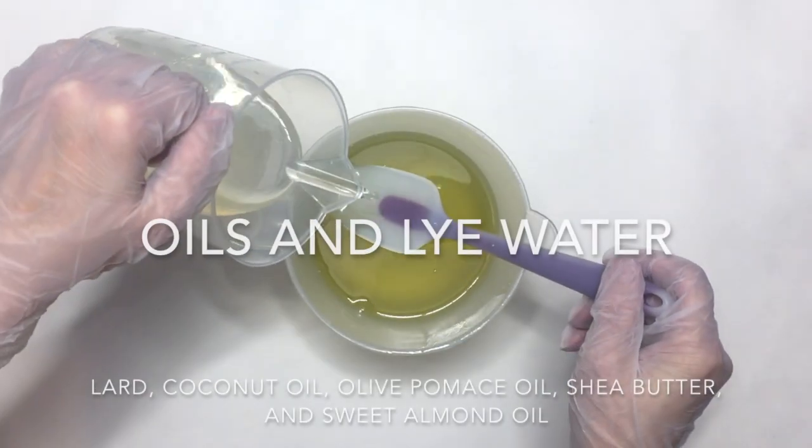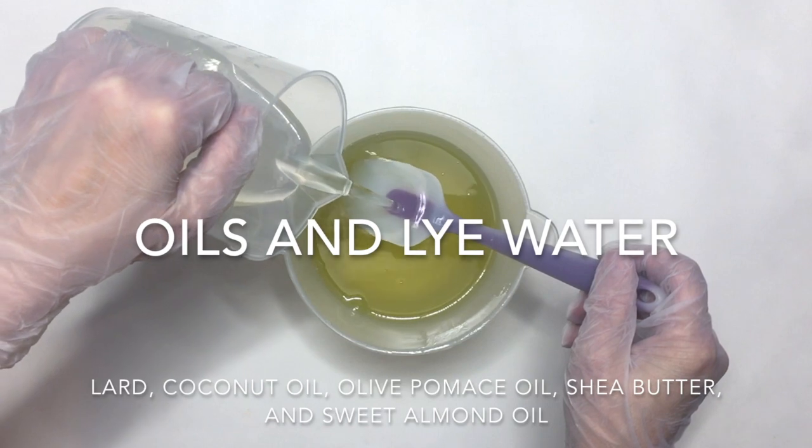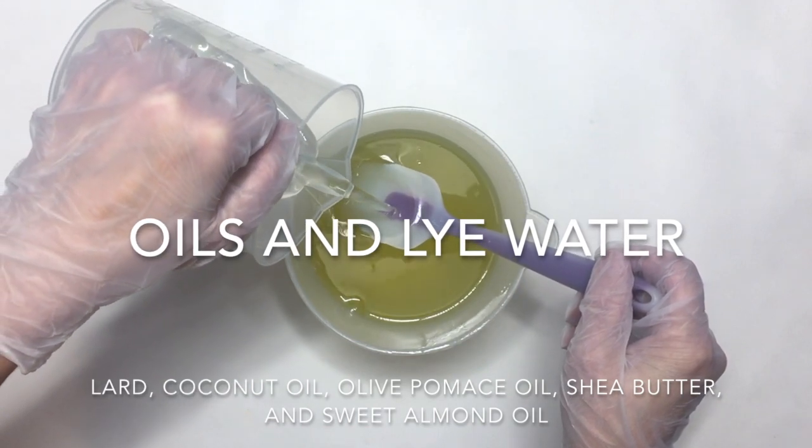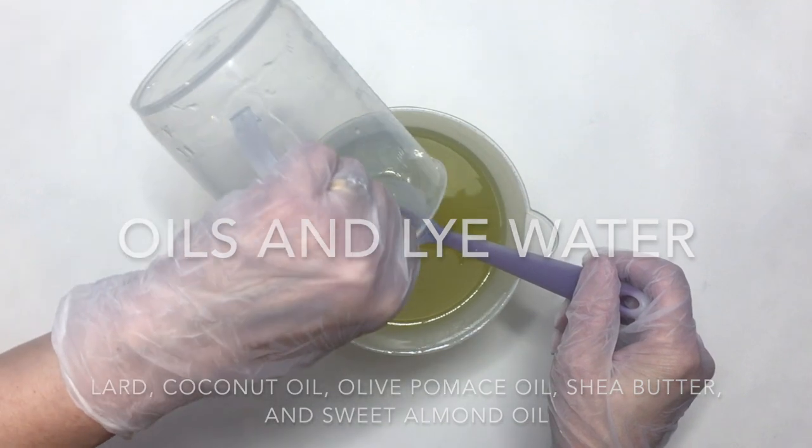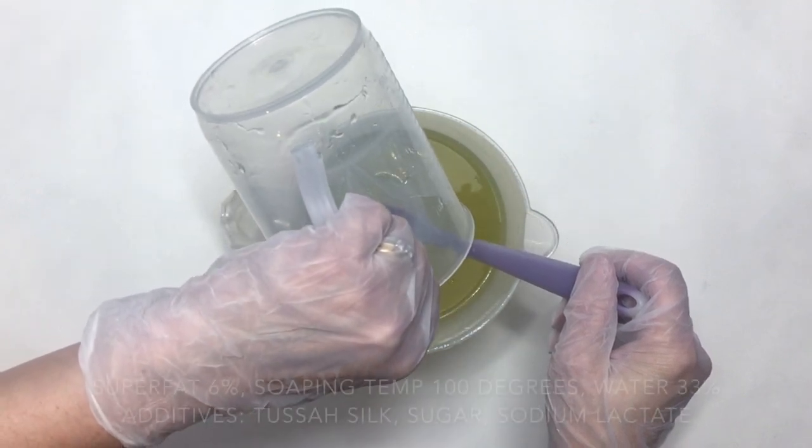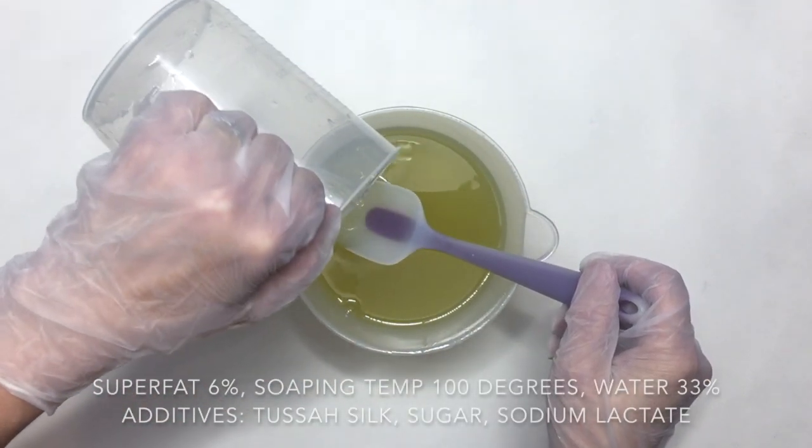I add the lye water to the melted oils. The oils I use are lard, coconut oil, olive pomace oil, shea butter, and sweet almond oil. I'm using a six percent super fat and I'm soaping at about a hundred degrees.